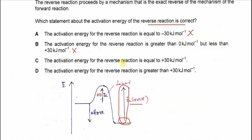See, the activation energy for the reverse reaction is equal to the 30 kilojoules per mole. So this one also wrong. The activation energy for the reverse reaction is greater than 30 kilojoules per mole.